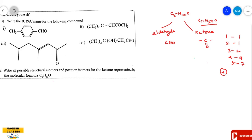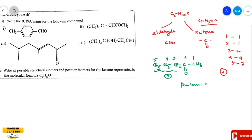Now for the ketone isomers with five carbons. The first ketone structure: CH3-CO-CH2-CH2-CH3, numbering one, two, three, four, five — this is pentan-2-one. The second structure: CH3-CH2-CO-CH2-CH3, numbering one, two, three, four, five — this is pentan-3-one.